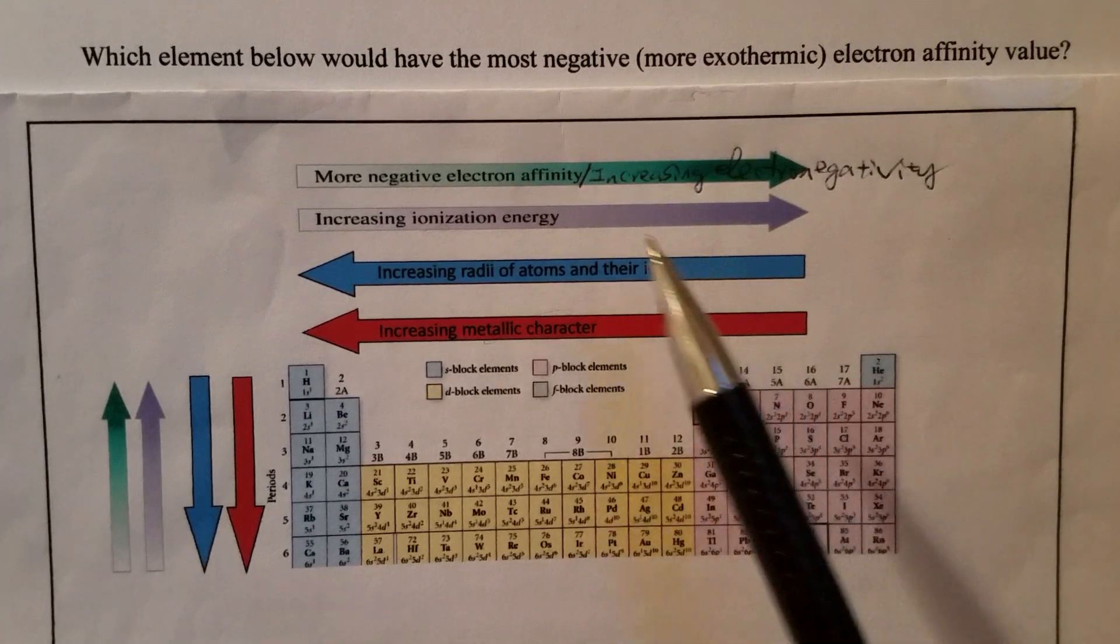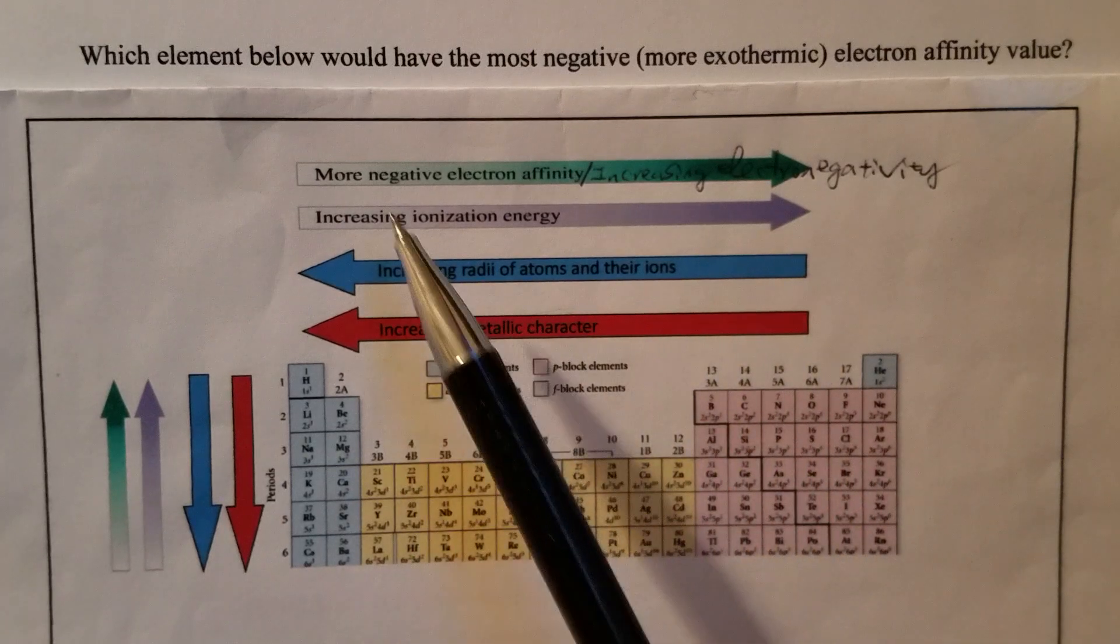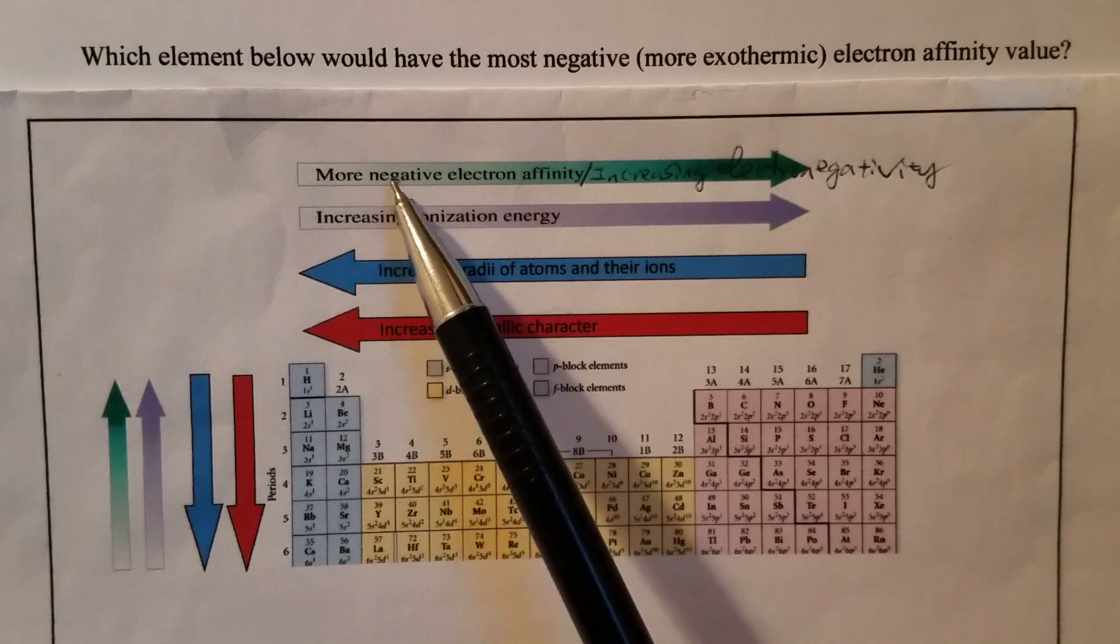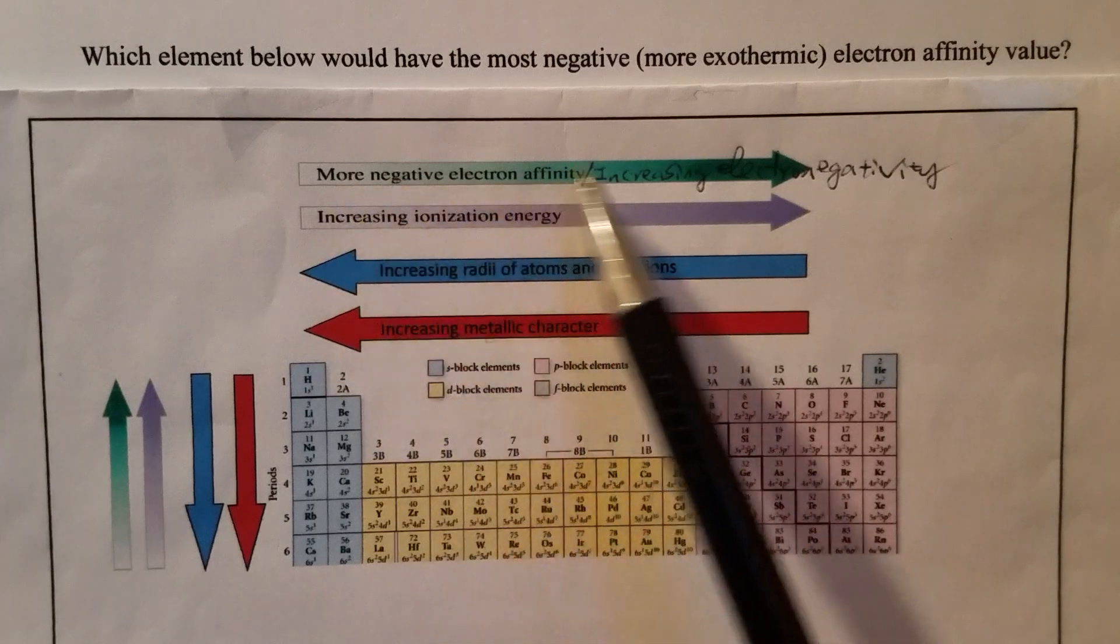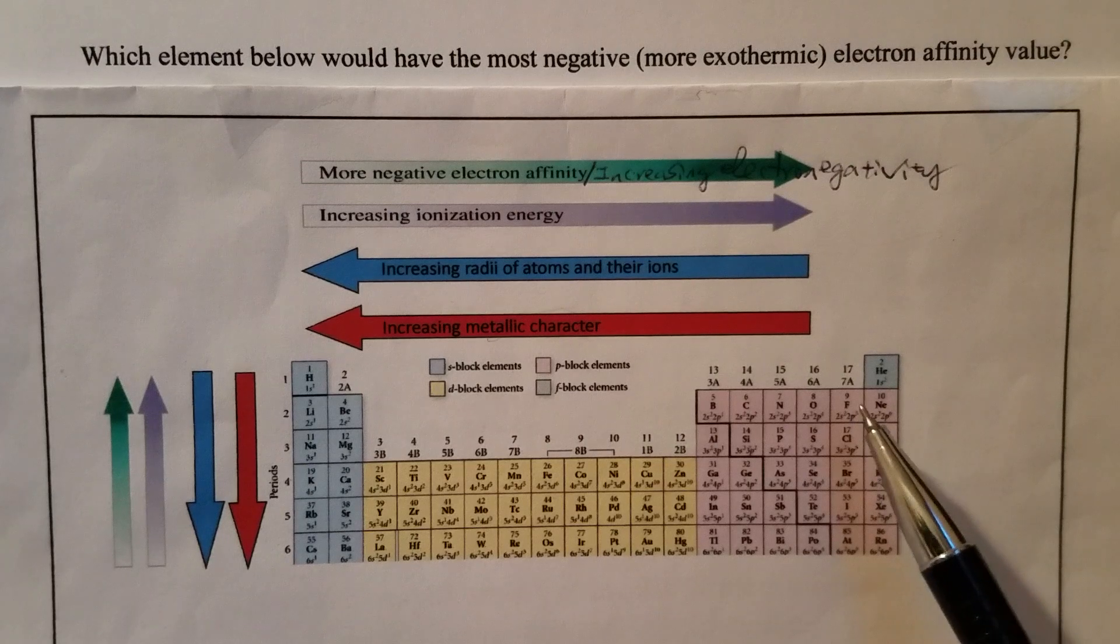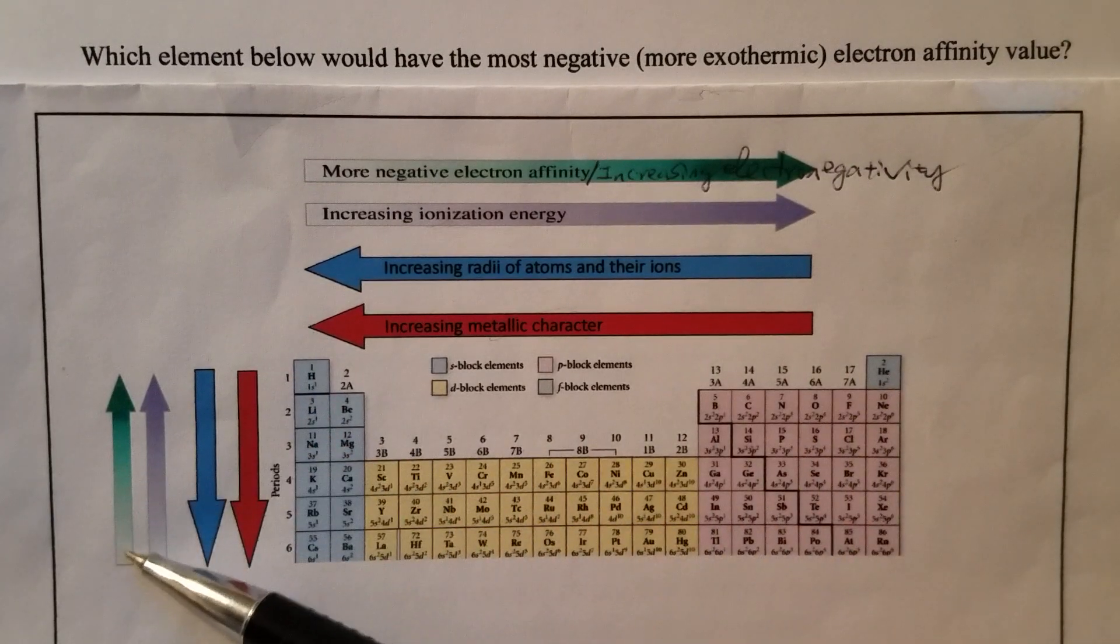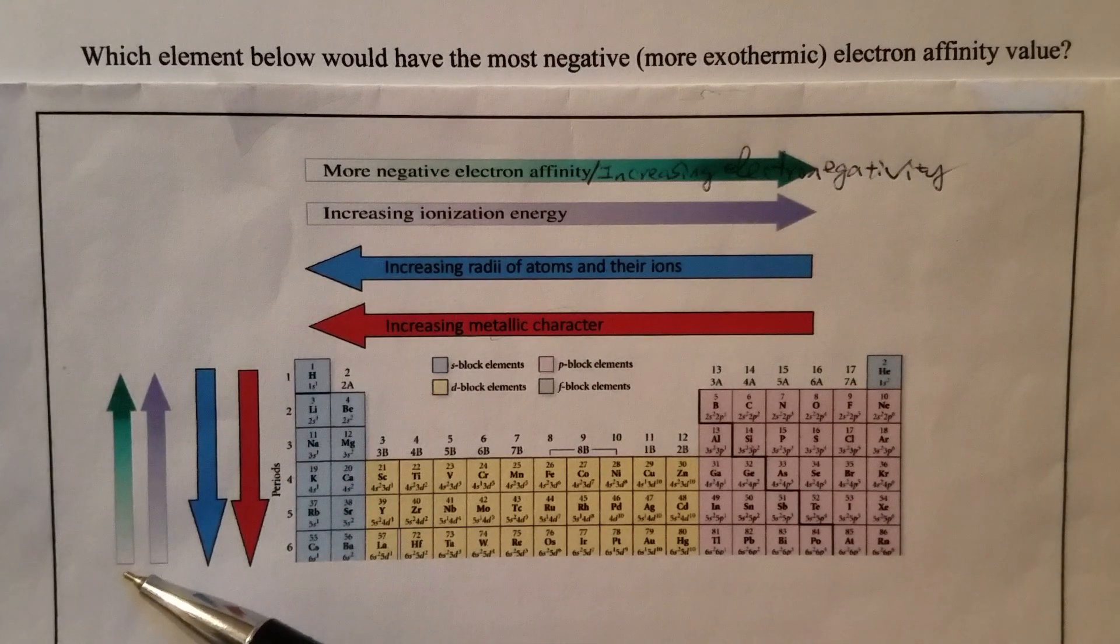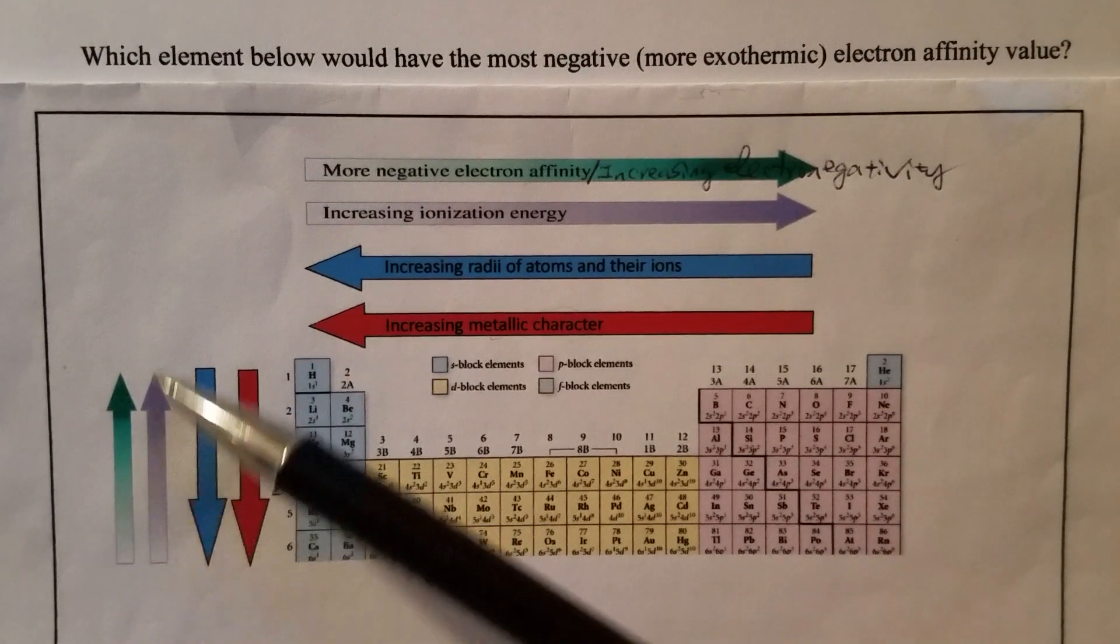Let's take a look at this arrow diagram. The green one says more negative electron affinity increases from left to right. So we're talking about using a periodic table, and it also increases from larger period to smaller ones. That's the trend.